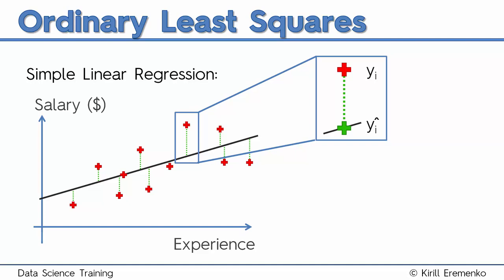The green line is the difference between what he's actually earning and what he's modeled to be earning.